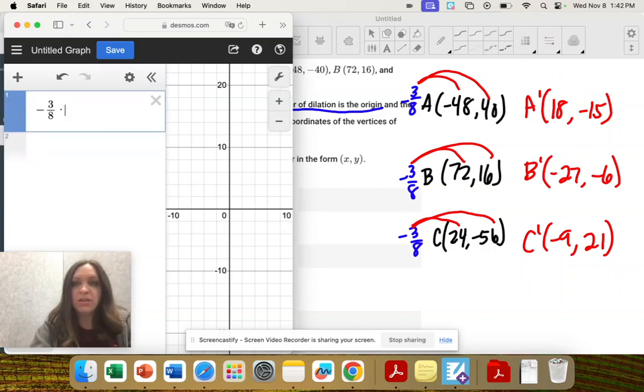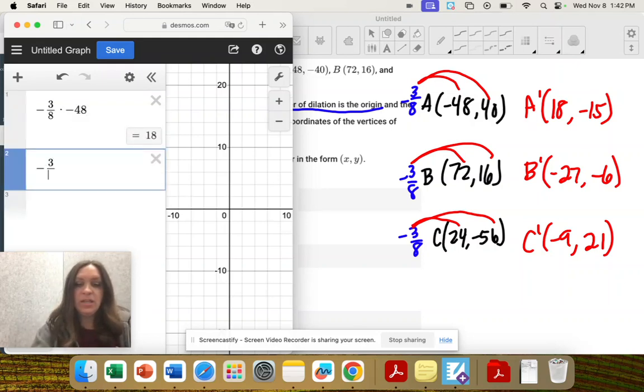So that one should be negative 3 eighths, I'm going to just calculator it, times negative 48, which is 18. And then negative 3 eighths times 40, okay, which is negative 15.